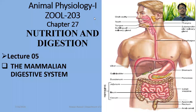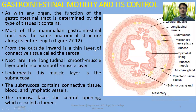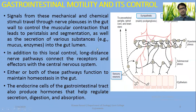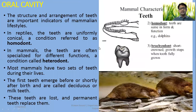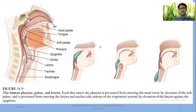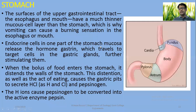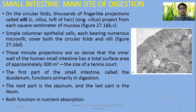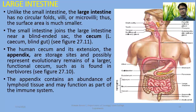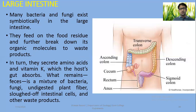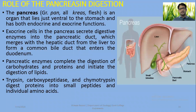In the last lectures we have discussed various parts of the mammalian digestive system, using the human digestive system as an example. We covered the oral cavity, esophagus, stomach, small intestine, and large intestine with their associated functions. Today we are going to have some discussion about associated glands of the digestive tract.